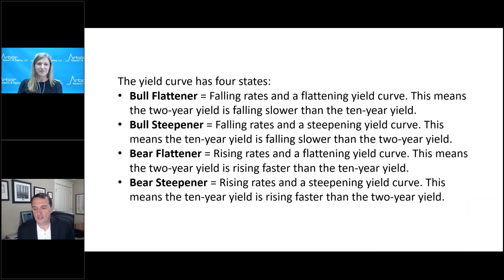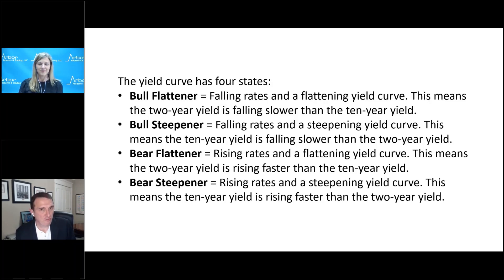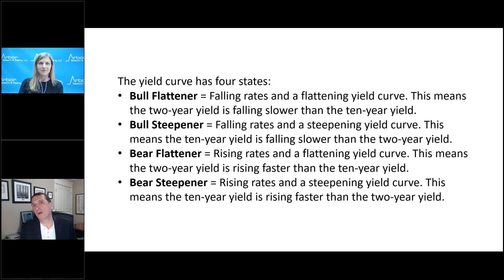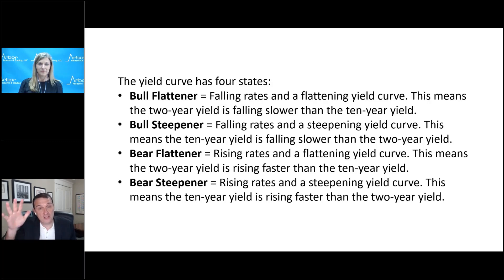When you talk about the yield curve, there's whether or not interest rates are going up or down, and that's referred to in terms of price. Bull means that interest rates are falling, and bear means that interest rates are rising. Then there's the shape of the yield curve, whether it is steepening or flattening. So you've got the bull flattener — falling interest rates and a flattening yield curve — meaning 10-year yields are coming down faster than 2-year yields. You've got the bull steepener: falling interest rates, but short rates are falling faster than long rates.